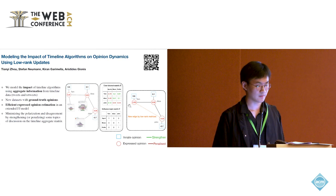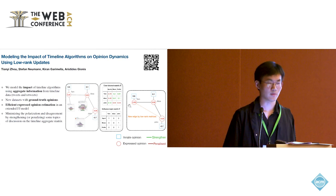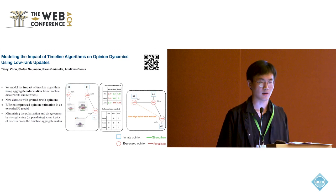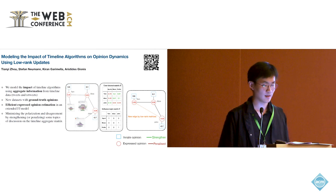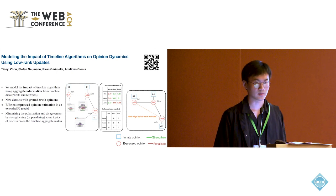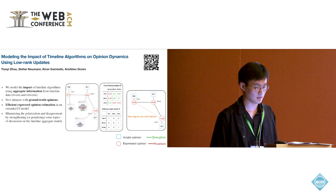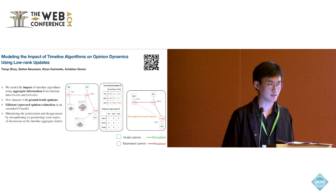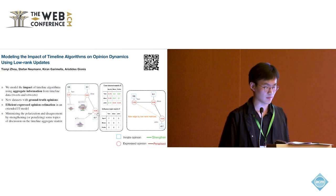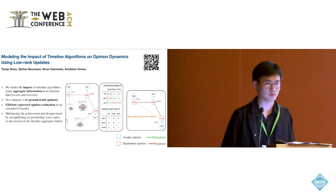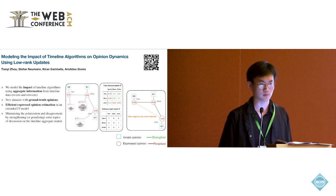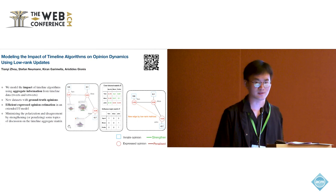To summarize, what we do here is we provide a way to model the timeline algorithm. We also provide a novel dataset with ground truth opinions, and we provide an efficient way to estimate the expressed opinion of the extended FJ model. On top of that, we provide an algorithm to minimize polarization by transferring weights from penalized topics to strengthened topics. Thank you.